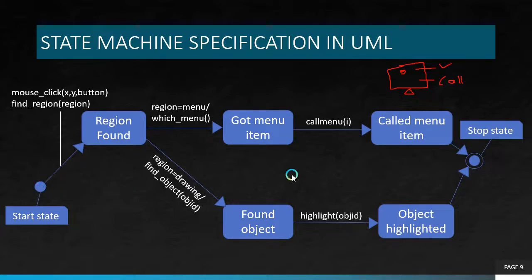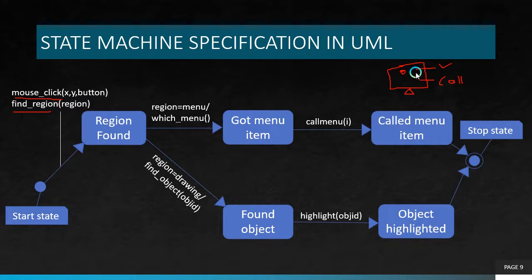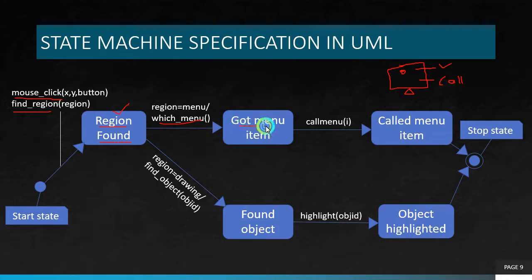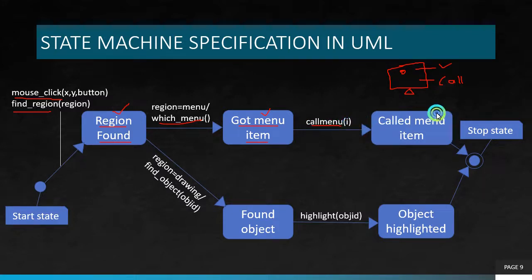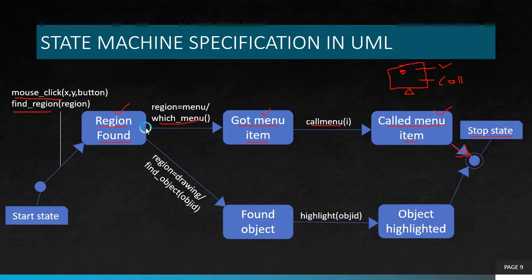The start state is indicated with a filled circle, and the stop state is indicated with a filled circle over an unfilled circle. After the start state, I am clicking in the display using mouse_click or find_region. After clicking, I found a region, reaching a state called 'region found'. After that, I select the item by calling which menu — region equals which menu — and I reach a state called 'got menu item'. After getting the menu item, I call it using call_menu(item), reaching a state called 'menu item'. After reaching this state, I go to the stop state, having completed all processes.